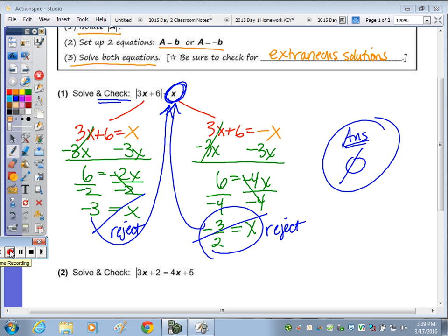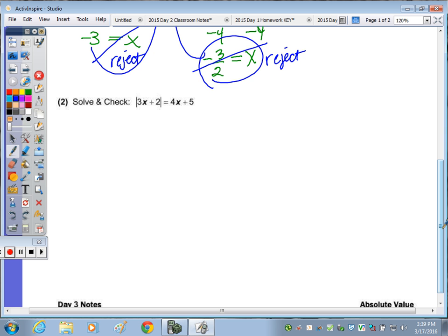And number 2 says to solve and check. The absolute value expression is isolated, so we're going to make our two equations and then solve them both. So 3x plus 2 equals, 3x plus 2 equals. Now, for the algebraic expression, it stays the same for one, just like x remained the same, because that's the positive. And then if you negate this, so if I negate 4x plus 5, it switches the sign of both terms. So equals negative 4x minus 5.